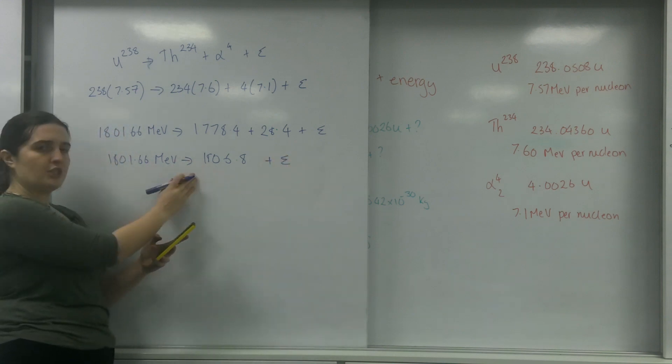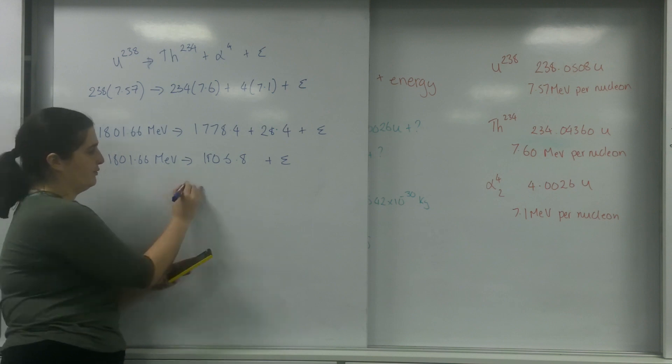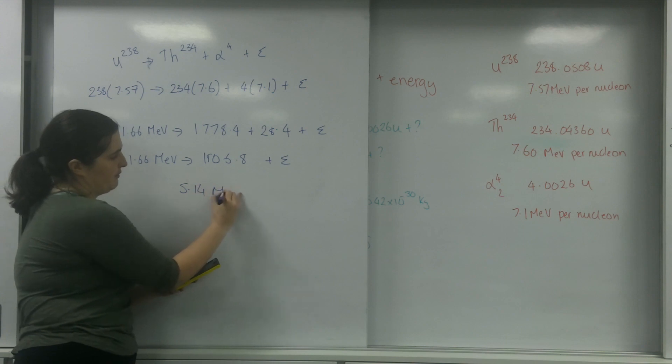There's a difference. As you can see, my products have a much bigger binding energy than my reactants. I'm going to find out how much that is. 1806.8 minus 1801.66 gives me an answer of 5.14 MeV.